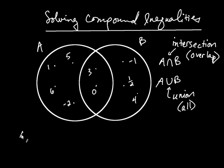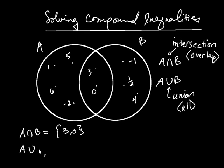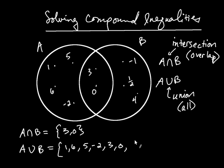For the example with these two circles, what is A intersect B? Intersection denotes overlap, and the overlap is the numbers three and zero. Now the union simply means all — any number belonging to either set: one, six, five, negative two, three, zero, negative one, one-half, and four. Union is basically everything; intersection is strictly the overlap.